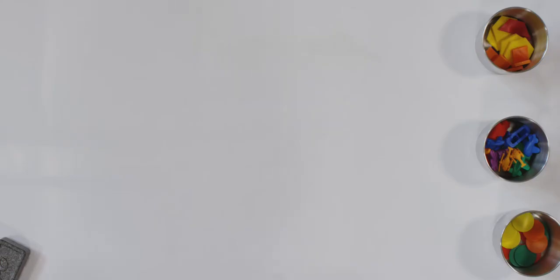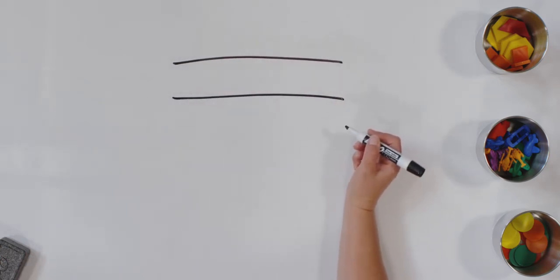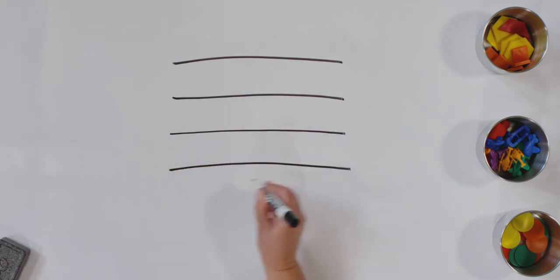To start, let's work together to make our graph on our whiteboard. We are going to make five lines across our whiteboard. Let's start at the top. I'm going to put mine right here. One, two. Try to make your line space the same amount of distance apart. Three, four, five.